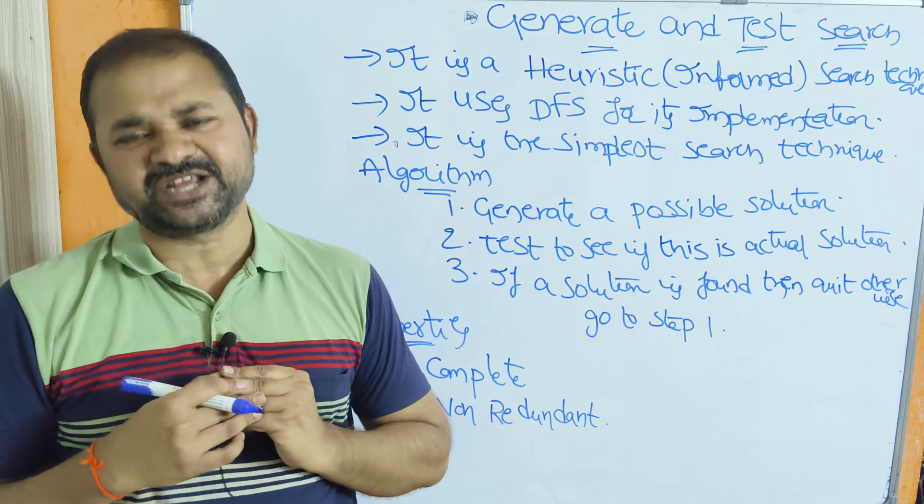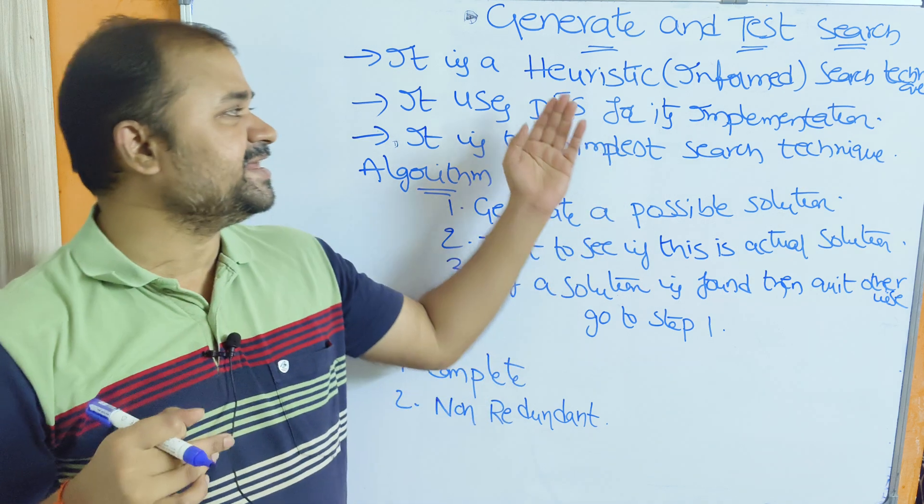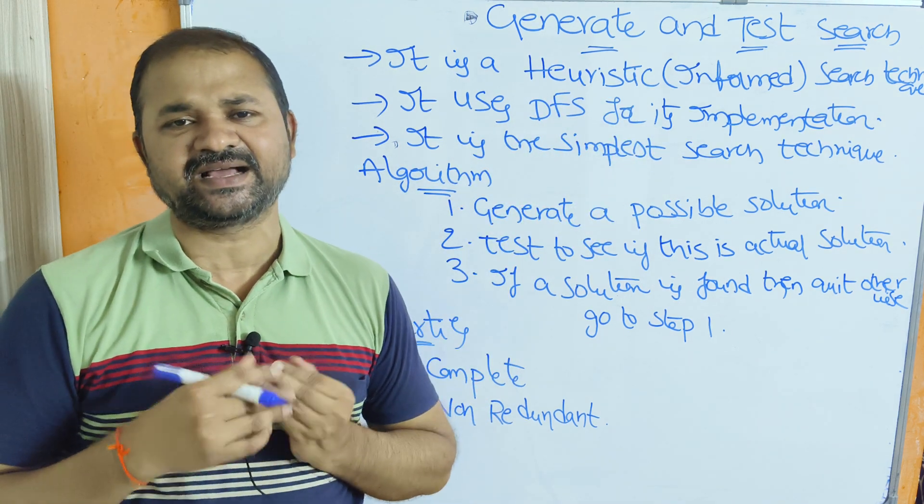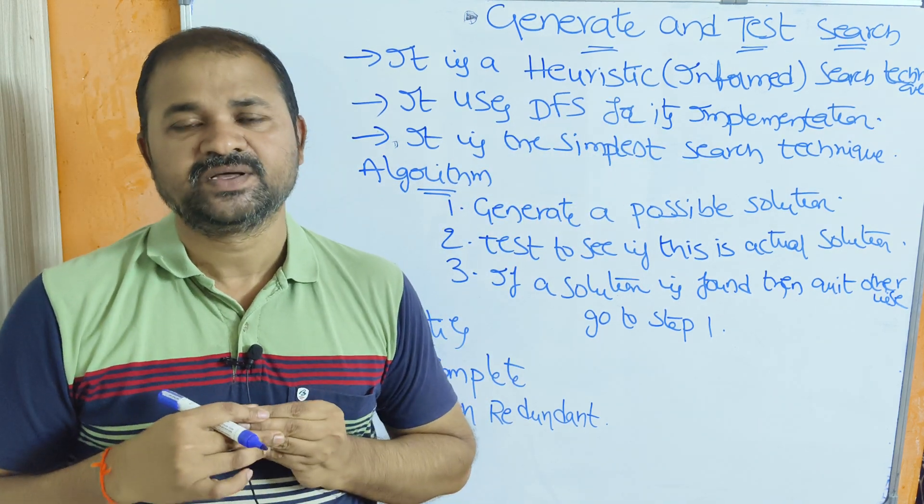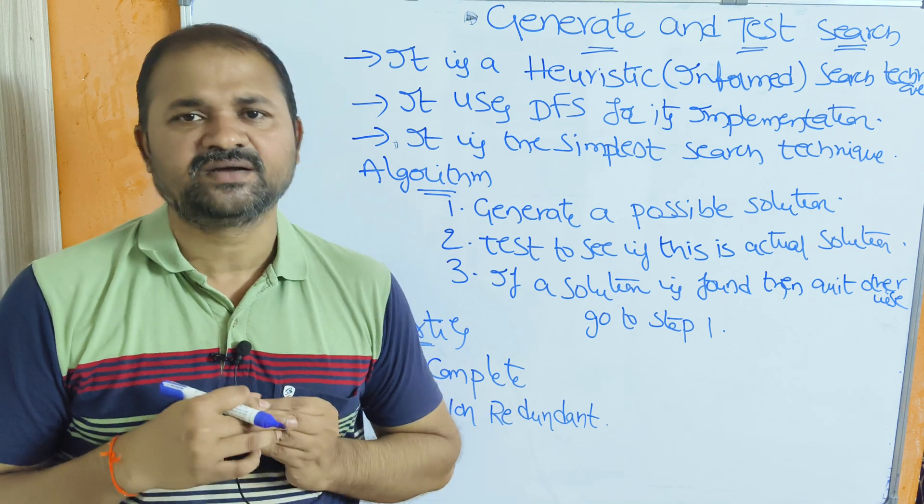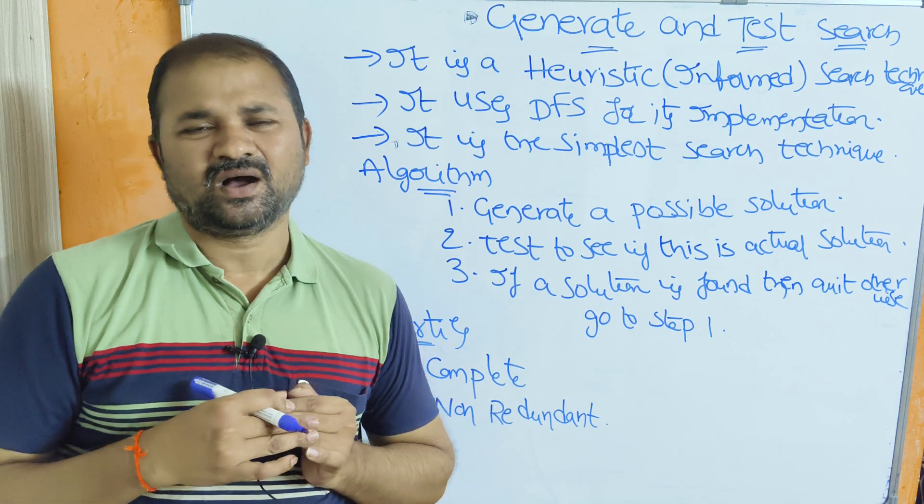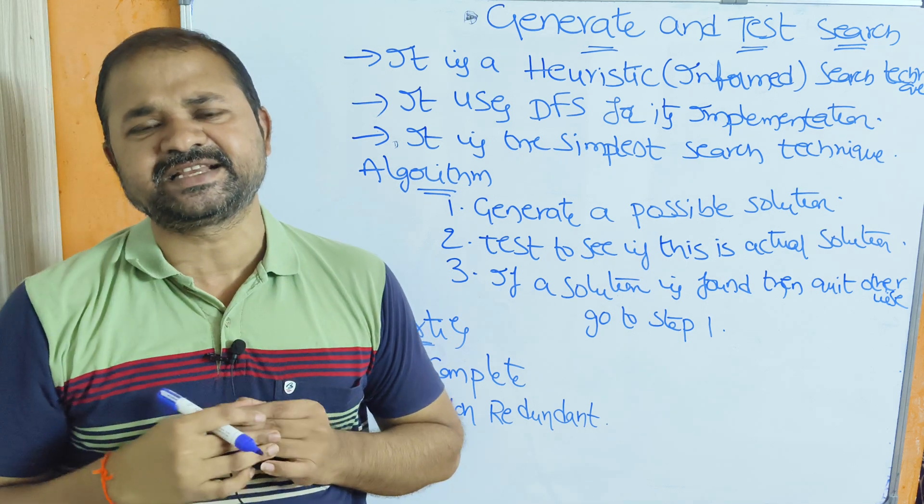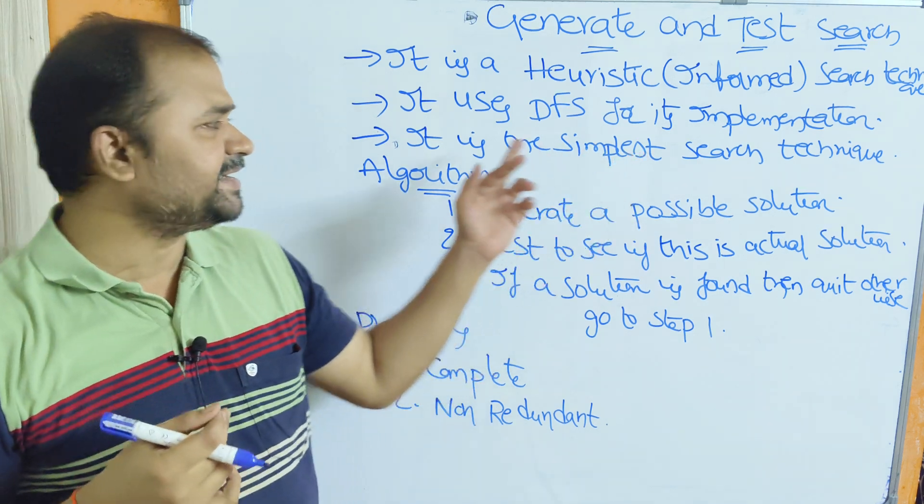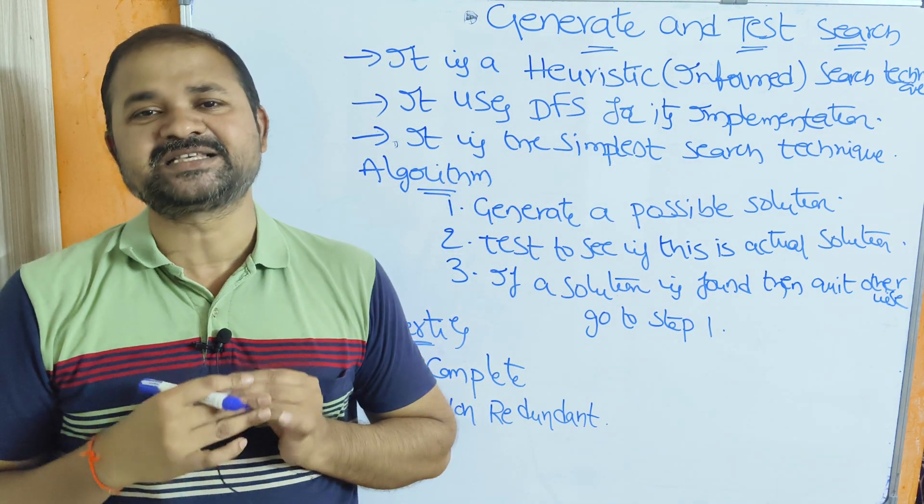It is the simplest search technique. We have various heuristic search techniques like generate and test, best-first search, A star algorithm, A-four star algorithm. Out of all the heuristic search techniques, generate and test is the simplest searching technique.